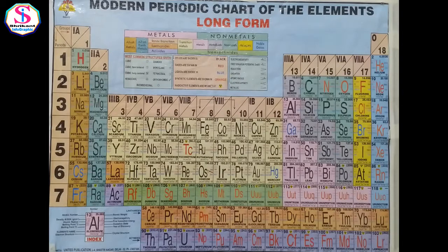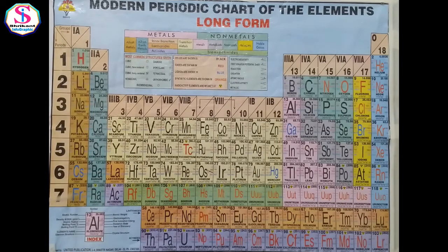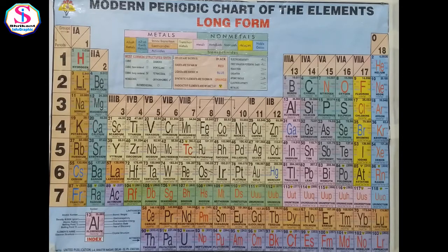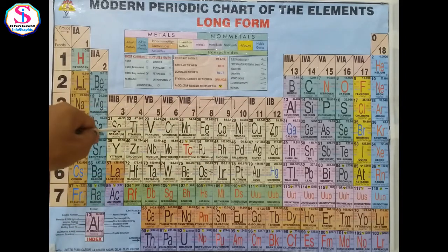The valency of an element is determined by the number of valence electrons in its outermost shell. All elements in a group have the same number of valence electrons. Valency increases from 1 to 4 across the second and third periods, then decreases from 4 to 0, reaching zero for the noble gases in group 18, which have no valence electrons.